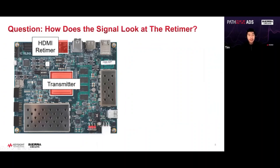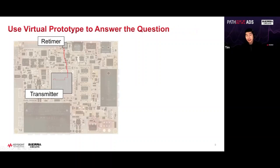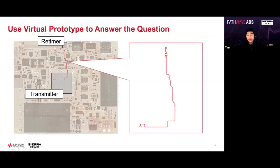In this slide we see in the middle a CPU — the transmitter. If we want to send a signal to the HDMI (High Definition Multimedia Interface), we have to go through a retimer due to the length and other technical aspects. On the real board we take a look at the layout. In the virtual world, we do a quick exploding view of the trace.